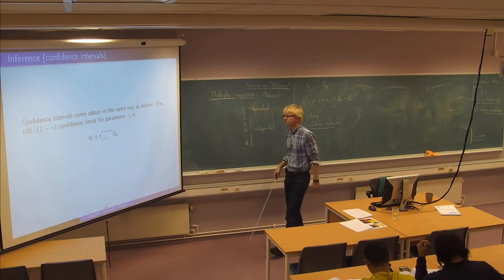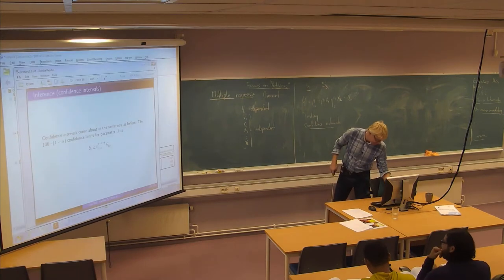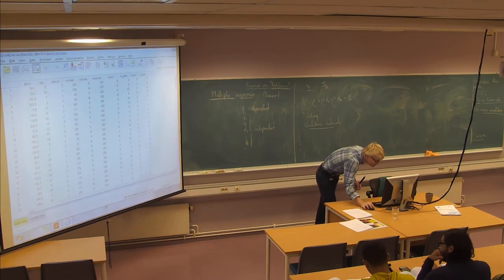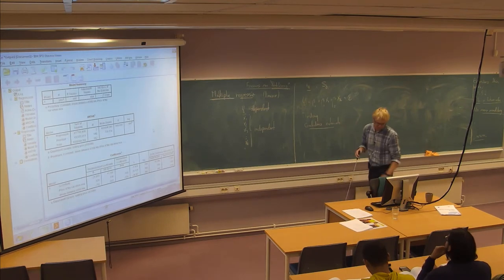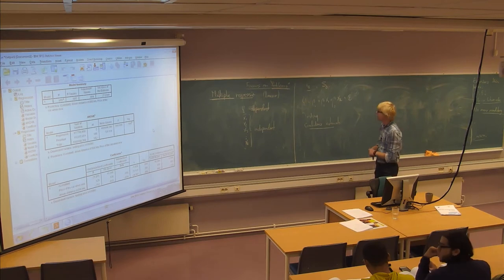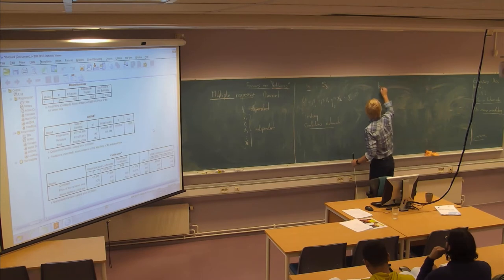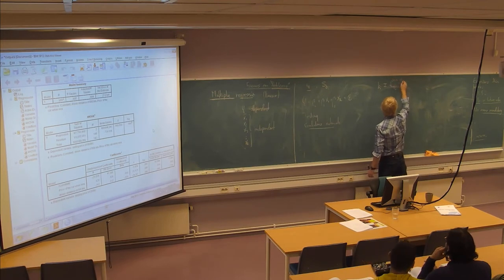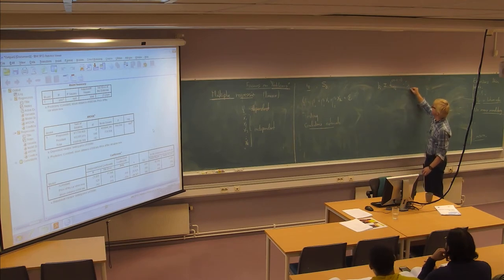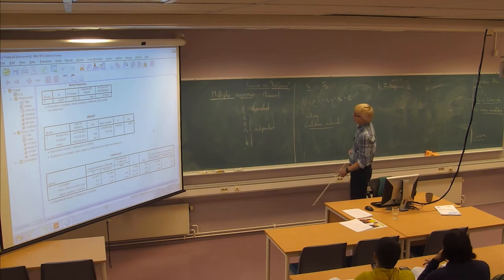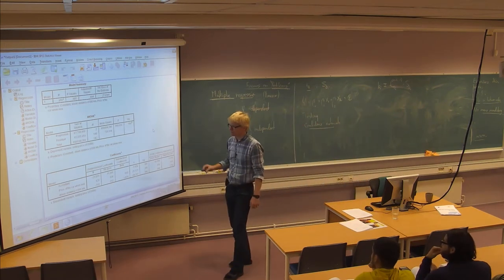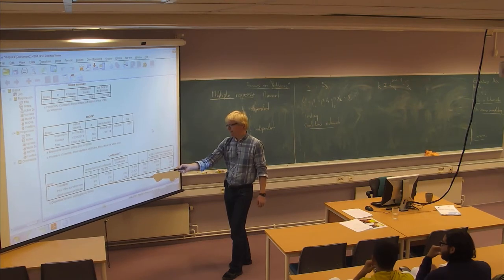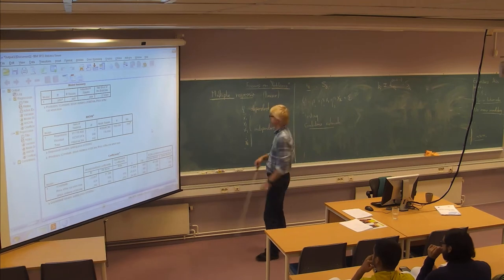They usually come as an estimate and then plus minus some factor this time from the T distribution times the standard deviation of the estimate like this. So you have b i plus minus t alpha half with some degrees of freedom, it happens to be n minus k minus one where k is the number of x variables and then times s b i, that's the confidence interval. So if you look at the impact of the driven distance in this model for instance, the estimate is like this, minus 0.78.